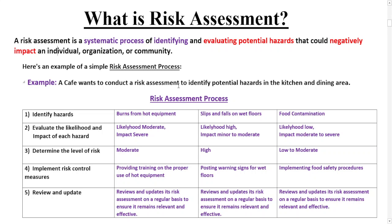Let's take an example. Suppose a cafe wants to conduct a risk assessment to identify potential hazards in the kitchen and dining area. As you can see on your screen, there are five steps involved in the risk assessment process: number one, identifying hazards; number two, evaluate the likelihood and impact of each hazard; number three, determine the level of risk; number four, implement risk control measures; and number five, review and update.